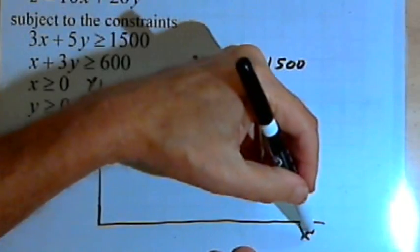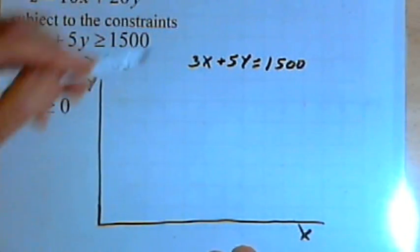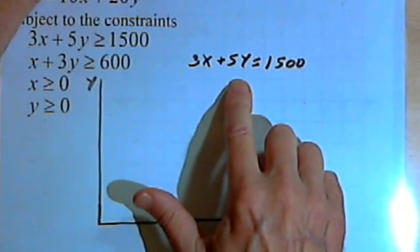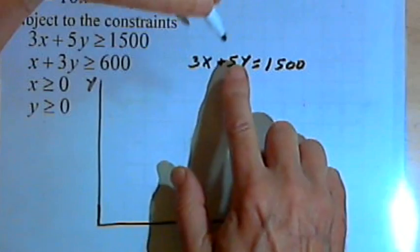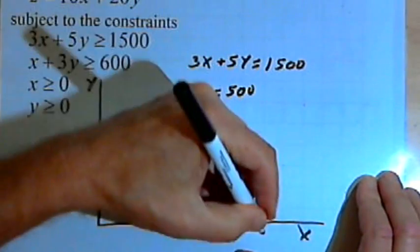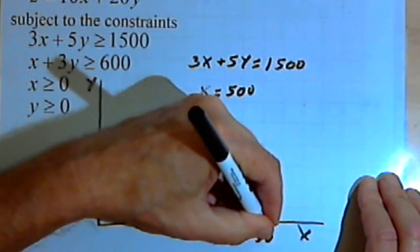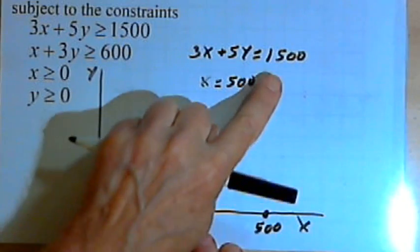The x-intercept happens along this x-axis where all the y values are 0. So if y was 0, I would just have 3x equals 1500 and therefore x would equal 500. So I've got an x-intercept at x equals 500.